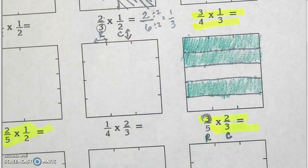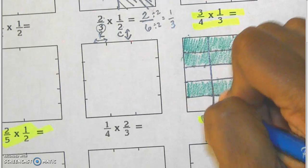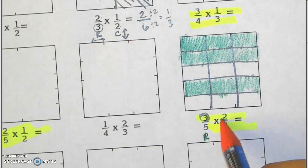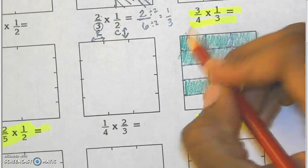For my second fraction, it tells me I need three columns. So I'm going to create three. And of the three, two of them need to be shaded. Two need to be shaded. So I'm going to shade in two.